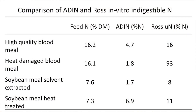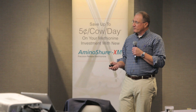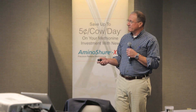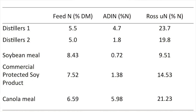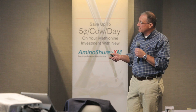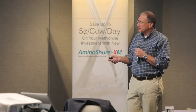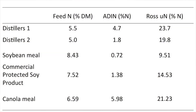Here's the high-quality blood meal, there's the heat-damaged blood meal. One of the other problems we've had is we've used ADIN as our metric for indigestible nitrogen. My argument has been that might work for forages, but I'm not sure it works for a non-forage feed. Here's ADIN: 4.7 and 1.8. Here's the soybean — just a solvent-extracted soybean. Here's a heat-treated soybean meal product: 7.3 percent nitrogen. You look at that — 1.7 versus 6.9. So that makes some sense. We heat-treated it, so the ADIN went up, which is what we'd expect. But then when you look at what comes out of our assay: 16% indigestible versus 93% indigestible. You're not going to see that with an ADIN.